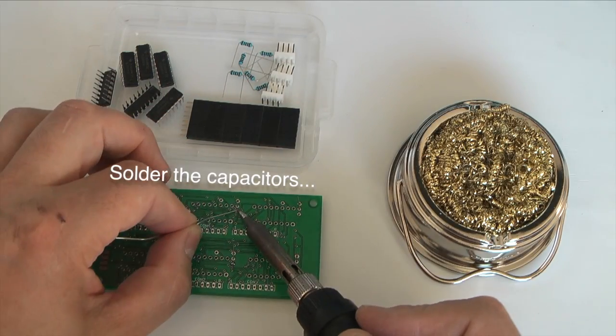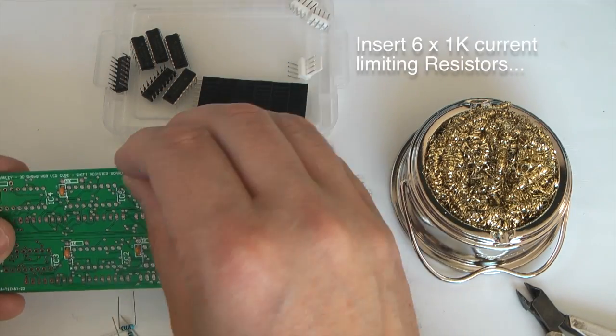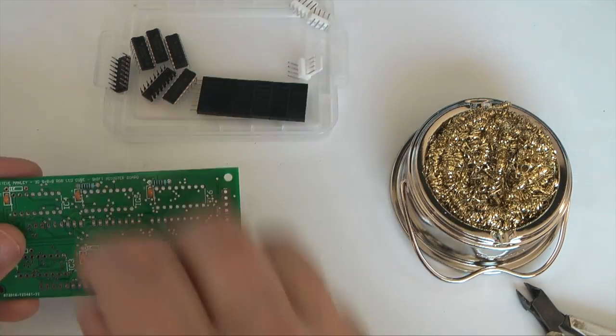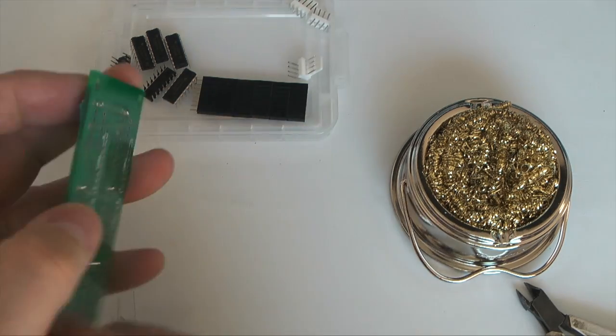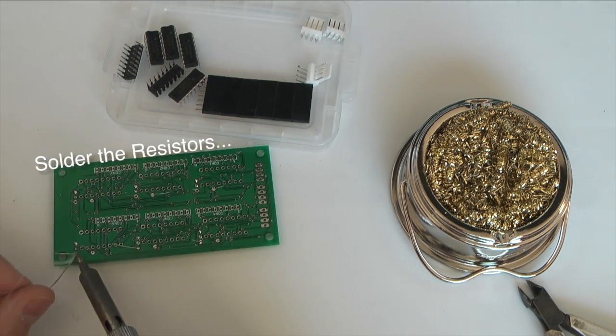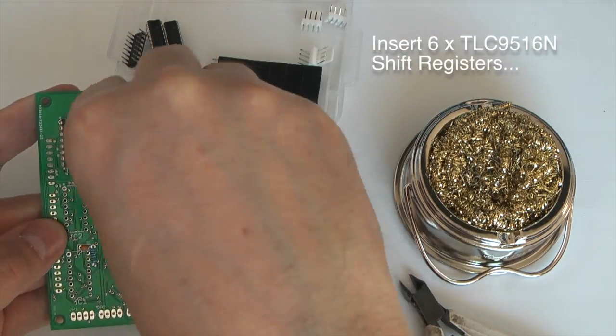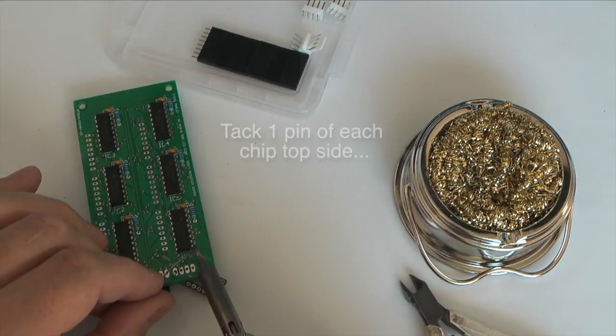The first components to go on are the decoupling capacitors followed by the current limiting resistors. I'm using TLC5916N shift registers. These are specifically designed for driving common anode LEDs and each of the eight outputs is governed by a single constant current limiting resistor. These are 1k and will limit each of the eight outputs to 20 milliamps.